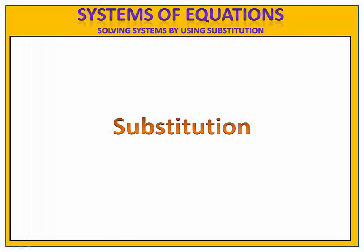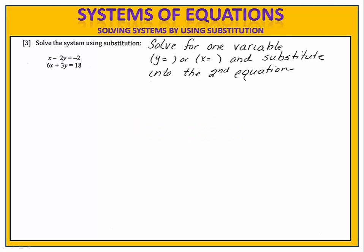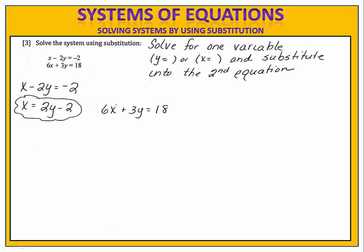A second method for solving systems of equations is substitution. With substitution, we solve one of the equations for one of the variables, so we have y equals or x equals, and then we substitute that into the second equation. For instance, in this exercise, let's suppose I take the first equation and I solve for x: x equals 2y minus 2. I could take that and put it into the second equation, 6x plus 3y equals 18. Since x is equal to 2y minus 2, I can replace the x in the other equation with the 2y minus 2. I've completed the substitution.